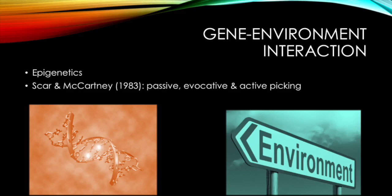Scarr and McCartney in 1983 noted that there were three different ways gene-environment correlations occurred. There was the passive correlation where children merely receive genes and child rearing. There is evocative correlation in which children's reactions from parents lead them to provide an environment that supports children's genes. Finally, there is an active correlation, also known as niche picking, where genes cause children to actively seek out their desired environment.